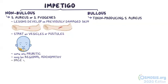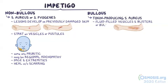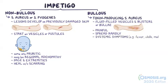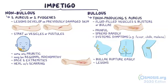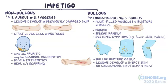The lesions usually affect the face and extremities and heal without scarring. Bullous impetigo is characterized by flaccid, fluid-filled vesicles and blisters, or bullae. These are painful, spread rapidly, and there are usually systemic symptoms like fever, chills, and malaise. There are usually multiple lesions, particularly around the nose and mouth, buttocks and trunk, and in body folds. The bullae rupture easily, leaving a rim of dry skin that surrounds a shallow wet erosion. Unlike non-bullous impetigo, the lesions develop on intact skin, and there's usually no surrounding erythema and regional adenopathy.